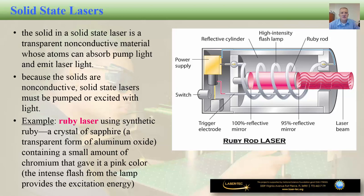Solid-state lasers use a transparent, non-conductive active material whose atoms can absorb pump light and emit laser light. Since these solids are non-conductive, the active medium is pumped using light — you can see on the picture on the right-hand side a coil-shaped high-intensity flash lamp pumping light energy into the laser cavity. An example of a solid-state laser is the ruby rod laser, the first laser ever invented in the 1960s. It uses a synthetic ruby — a crystal of sapphire, a transparent form of aluminum oxide containing a small amount of chromium that gives it a pink color — pumped by a high-intensity flash lamp.